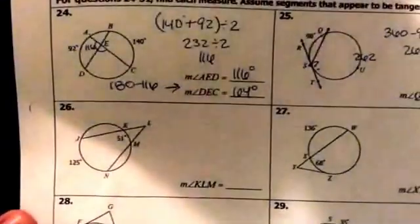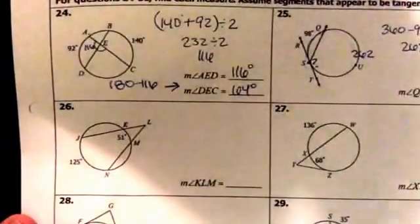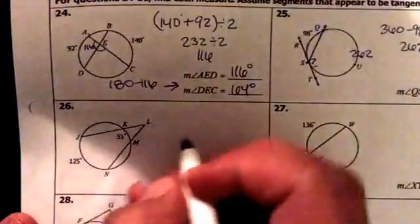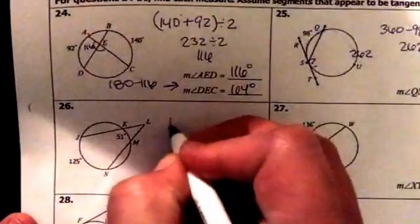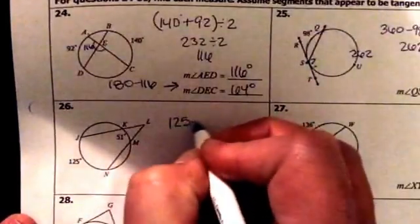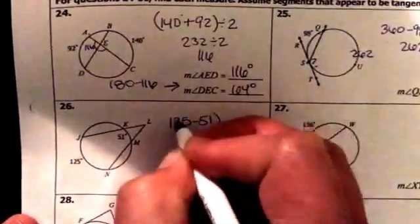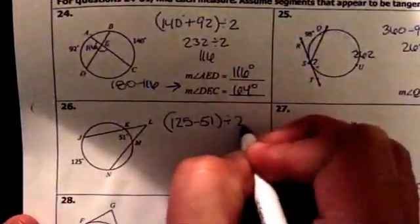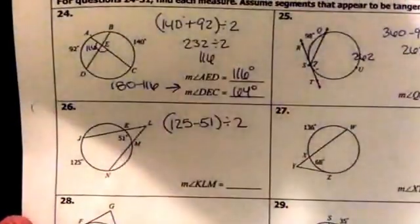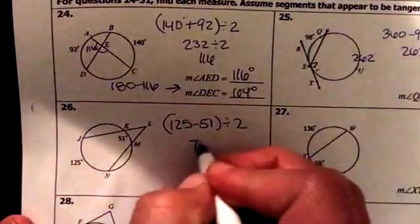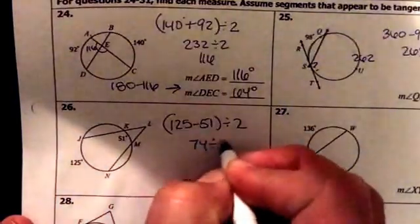On question number 26, the intersection is happening outside our circle. So we take our larger arc minus our smaller arc and then divide by 2. We go 125 minus 51, which is 74, divided by 2.